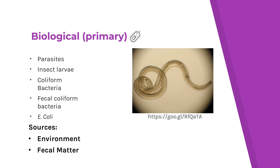Next, we have the biological contaminants. These include parasites, insect larvae, coliform bacteria, fecal coliform bacteria, and E. coli. Coliform bacteria is actually naturally occurring in the environment. However, fecal coliform bacteria comes from either human waste or animal waste, so its presence is an indicator that the water has been contaminated and there may be other contaminants in the water that should be tested.